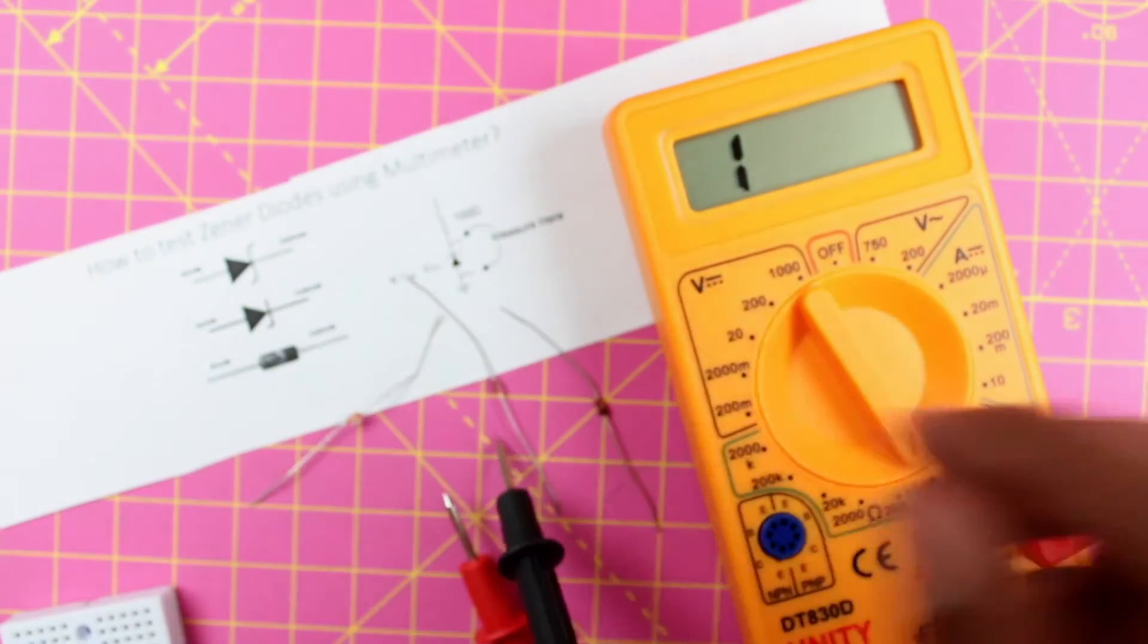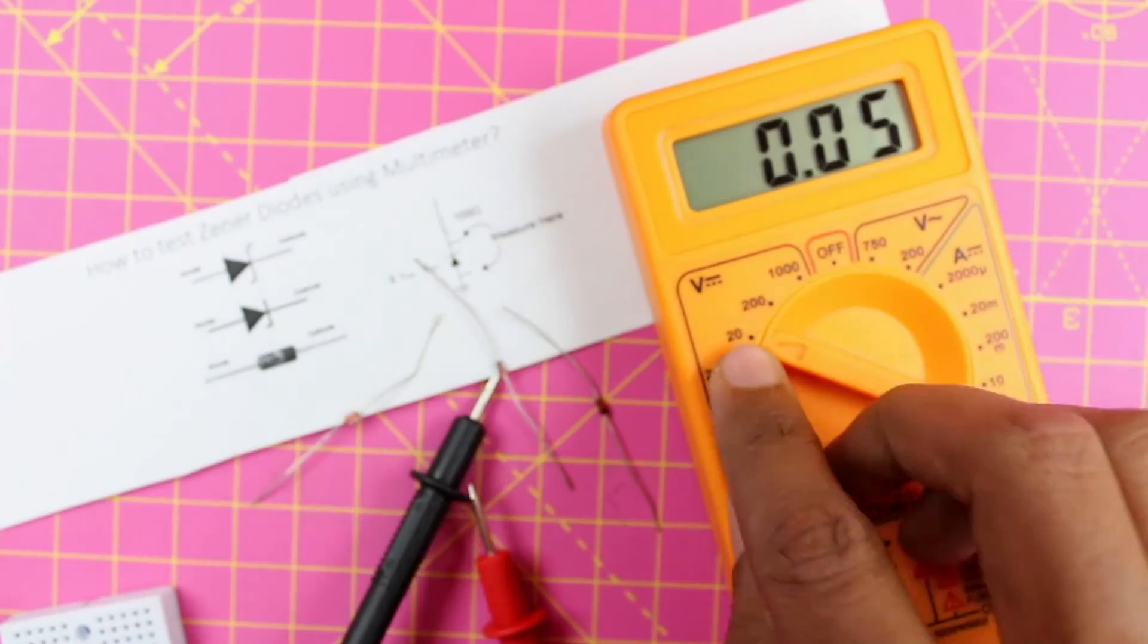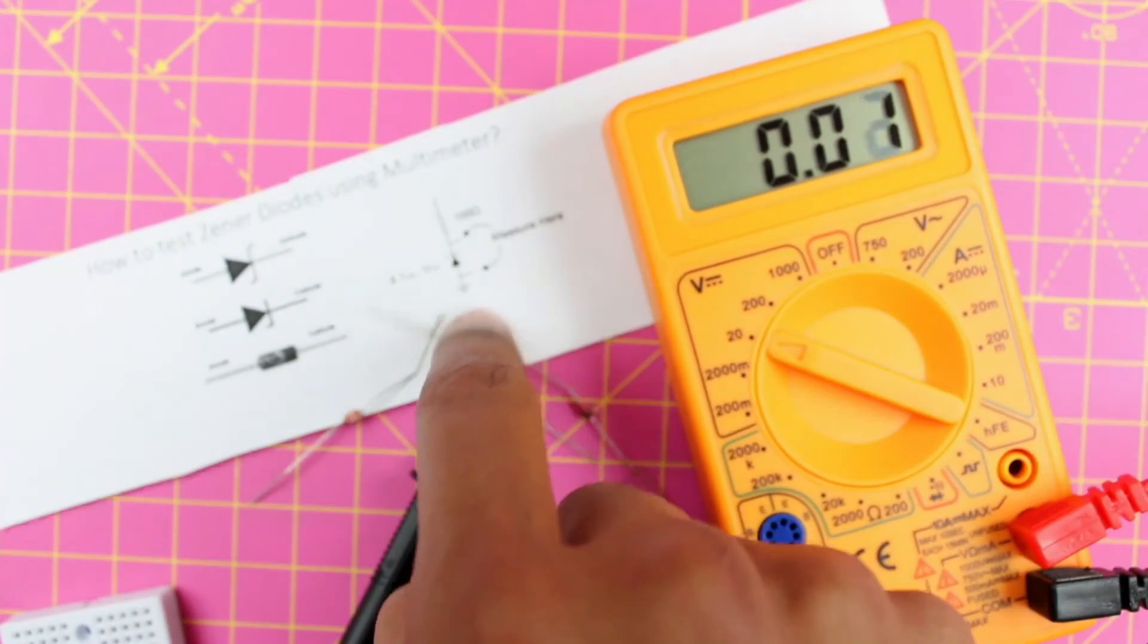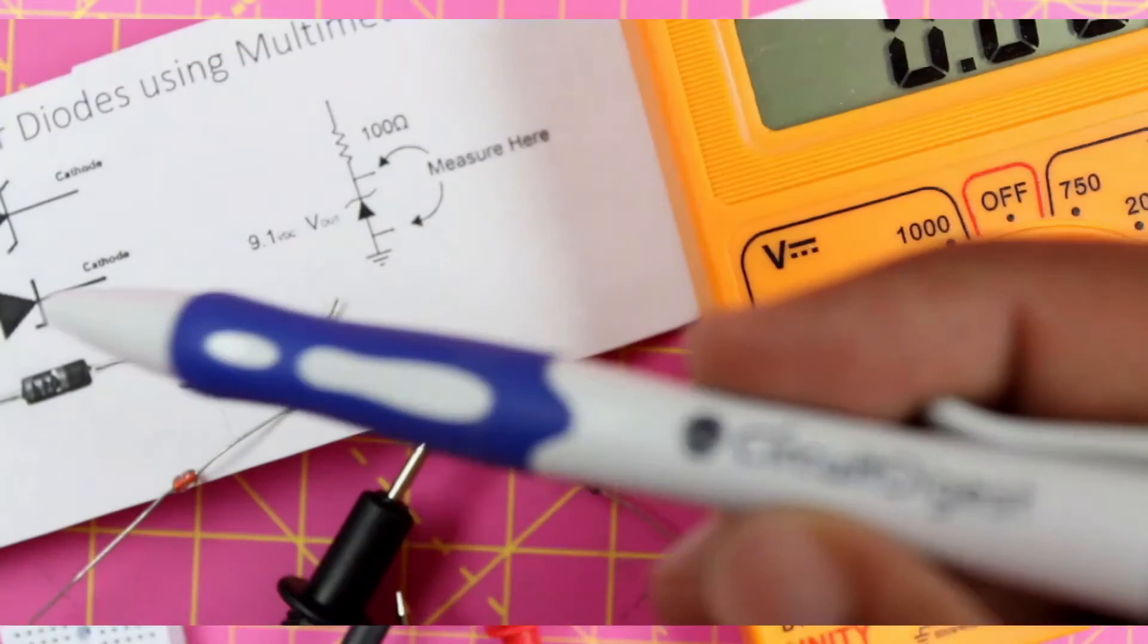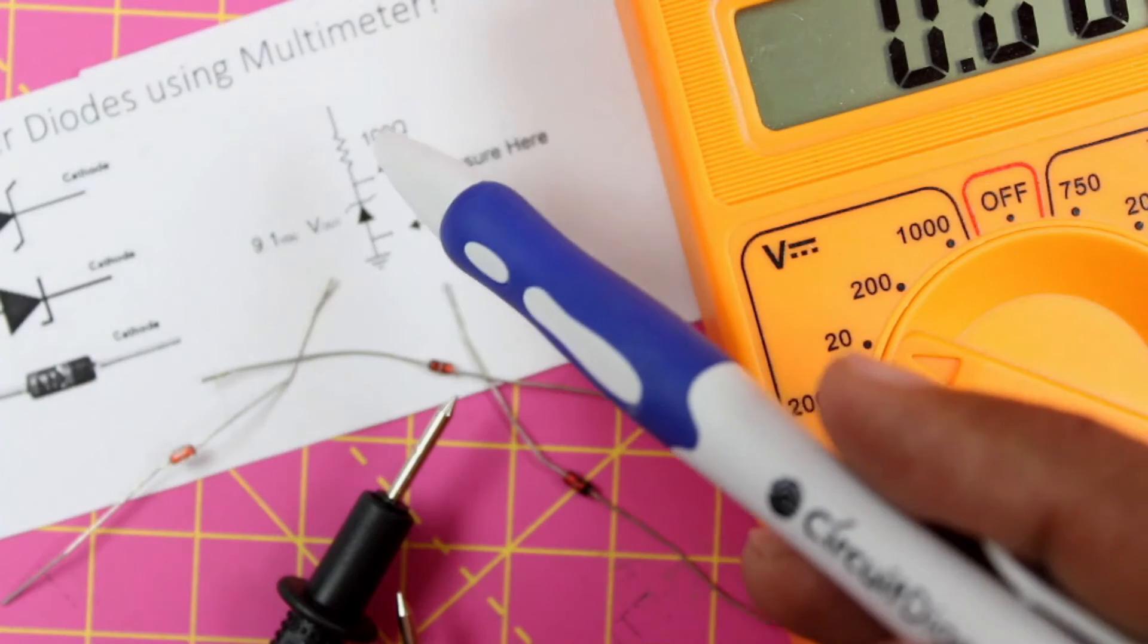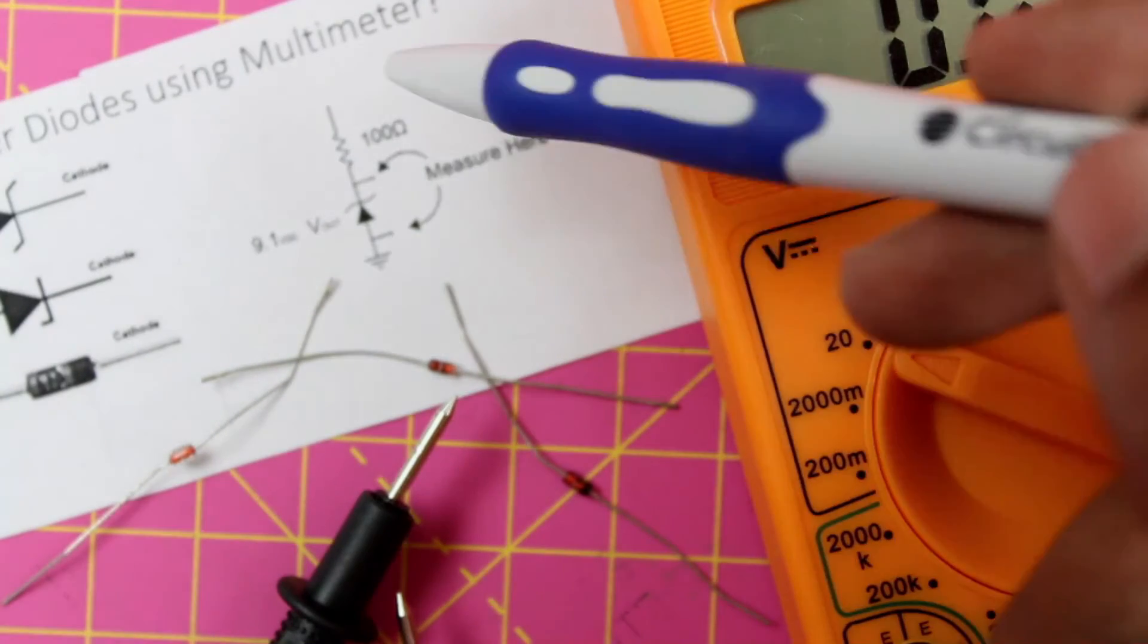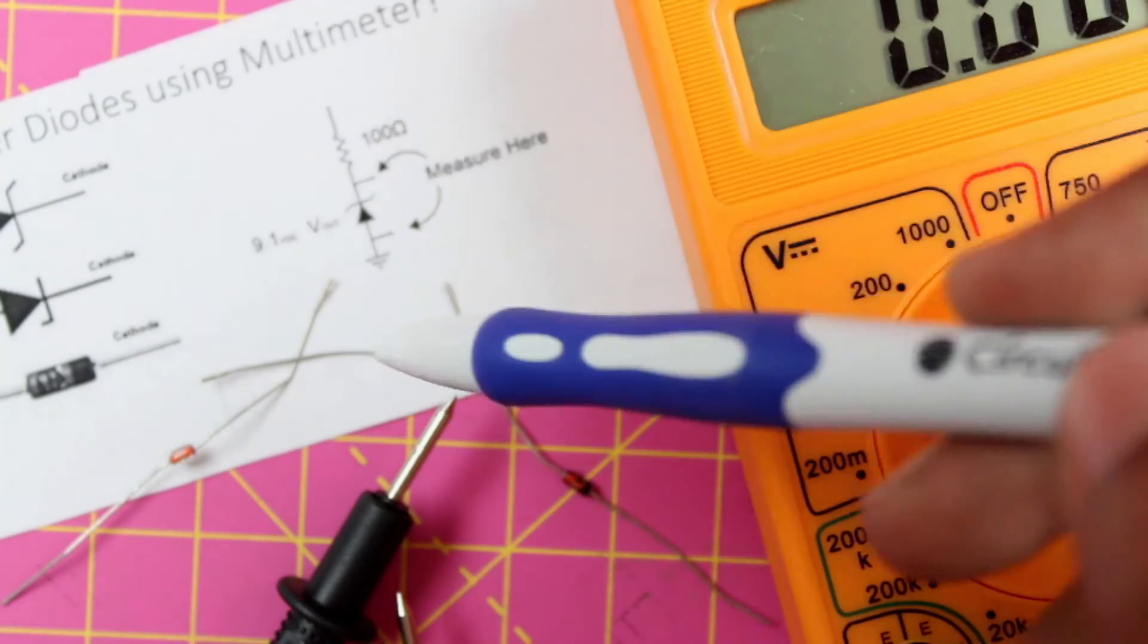The other thing that you can do is use your multimeter in voltage mode. Let's place it in 20 volt and make a connection according to this circuit. What we will actually do is use our zener diode along with a resistor, for example a 100 ohm resistor. And we will connect it to a voltage source here and connect it to a ground here.